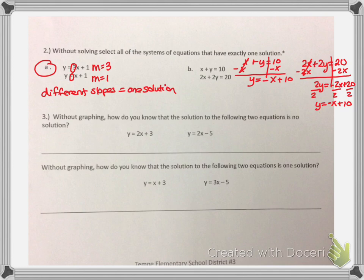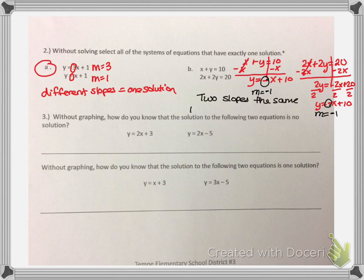I want to compare the slopes. The slope in the first equation is M equals negative 1. The slope in the second is also M equals negative 1. As soon as I see two slopes that are the same, I know I'm looking at either no solution or infinite. So this cannot be my answer. Looking at the y-intercepts, this one has a y-intercept of positive 10, and this one also has a y-intercept of positive 10. So this is an example of an infinite solution.